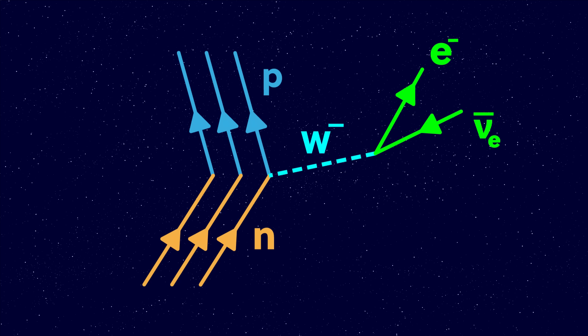See if you can work out what's going on here. This is a neutron, which is made of three quarks, up, down and down. It decays into a proton via the weak force. A proton is made of up, down, up quarks. The W boson that's emitted then decays into an electron and an anti-electron neutrino. So this is how neutrons can turn into protons via the weak force, and is known in nuclear physics as beta decay emission.